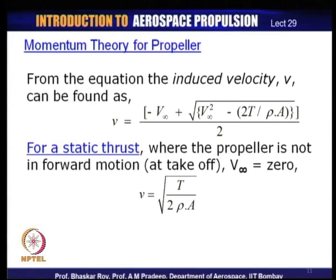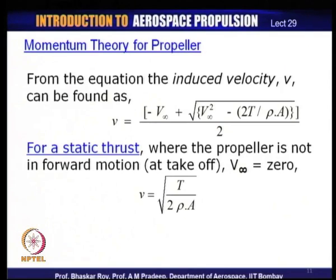Using this induced velocity, one can estimate the static thrust — where the propeller is not in forward motion, for example during takeoff when the aircraft is not moving. The far upstream velocity V∞ is zero, meaning flow is being sucked into the propeller from static atmosphere with no movement. In this case, the induced velocity can be written simply as v = √(T / 2ρA). This is a very simple way of figuring out the induced velocity during takeoff.